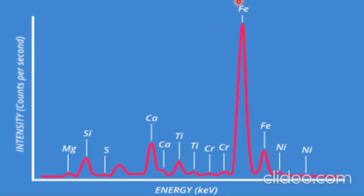Secondary X-rays generated in XRF spectroscopy may include K-alpha, K-beta, K-alpha 1, K-alpha 2, K-beta 1, K-beta 2, L-alpha, L-beta, and others. On the basis of these emitted X-rays, the energy peaks may vary.